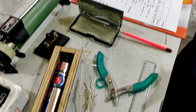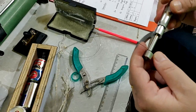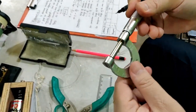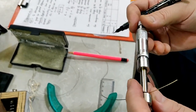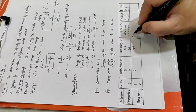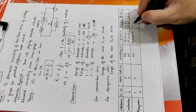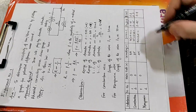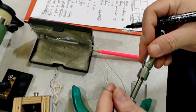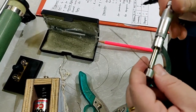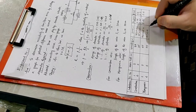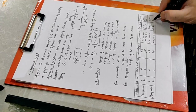Now let's measure the diameter of the manganin wire. This one is a little thicker. The coinciding division is at 45, so 45 into 0.01 equals 0.45 mm. After subtracting the error of 0.05 mm, the corrected diameter is 0.40 mm. Taking a second reading at a different position: again 45 into 0.01 equals 0.45 mm, corrected to 0.40 mm. So the diameter of the manganin wire is 0.40 mm.